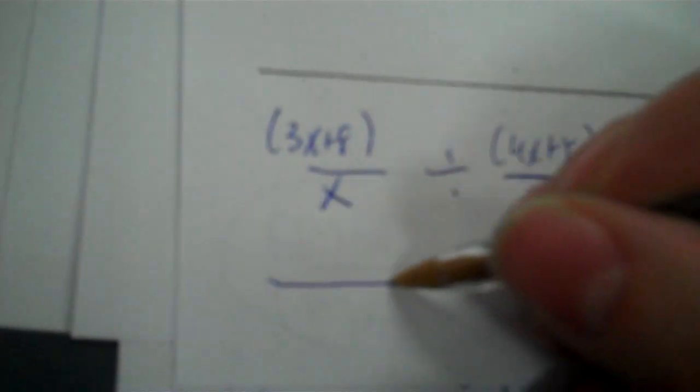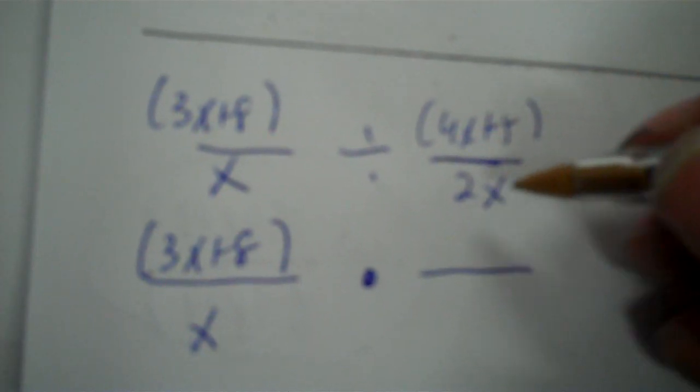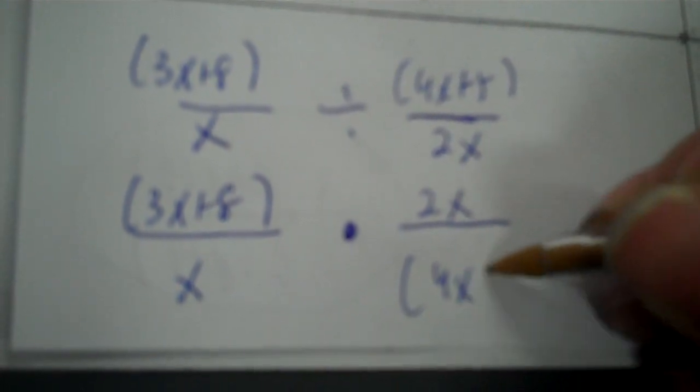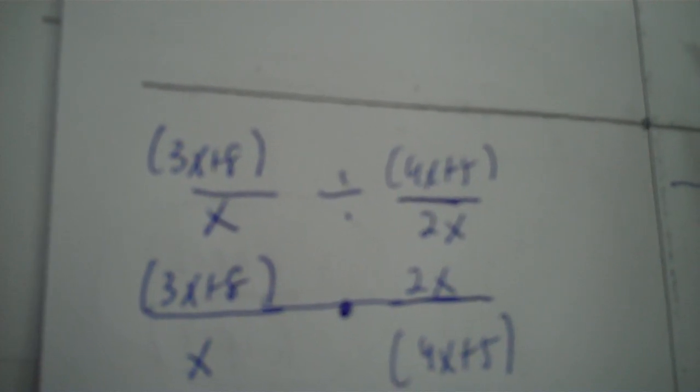Now flip that to multiplication. The first one stays the same. Then times — put 2x on top and the quantity 4x plus 5 on the bottom. A plus or minus sign means you need parentheses. The parenthesized quantities 3x plus 8 and 4x plus 5 stay in the answer. The outside factors: 2x and x — the x over x is a wipe out, and the 2 stays. So the final answer is 2 times the quantity 3x plus 8 over the quantity 4x plus 5.